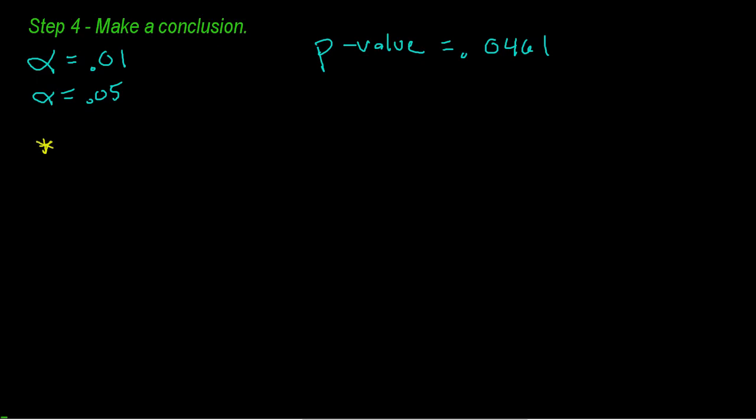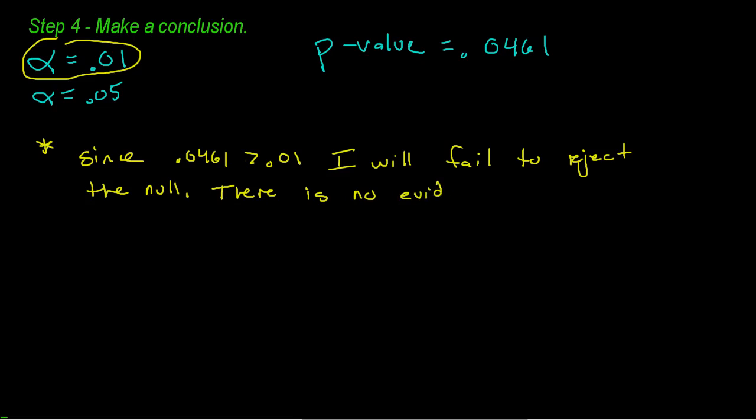This is a really important p-value because based on what alpha you choose, you can actually have two different conclusions. If I use an alpha of 0.01, since 0.0461 is greater than 0.01, I will fail to reject the null.